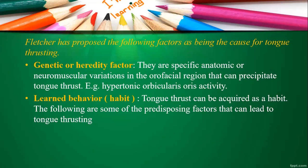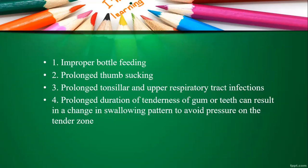Learned behavior is essentially habitual tongue thrust — tongue thrust can be acquired as a habit. Predisposing factors include: improper bottle feeding, which can lead to tongue thrust; prolonged thumb sucking, which has a significant role in developing tongue thrust; prolonged tonsillar and upper respiratory tract infections; and prolonged tenderness of gums or teeth, causing a change in swallowing pattern to avoid the tender zone.